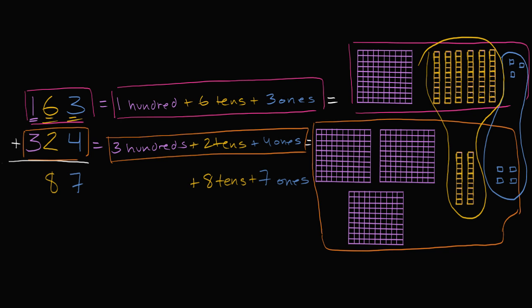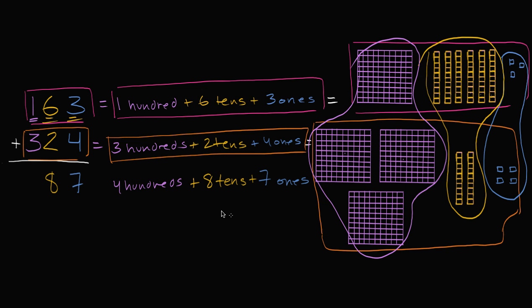And finally, we have 100 plus another three hundreds — four hundreds. So that's going to be four hundreds. And you see them right over here: one, two, three, four — four hundreds. Let me circle all of these. One hundred plus three hundred is four hundred. So 163 plus 324 is 487: four hundreds, eight tens, and seven ones.